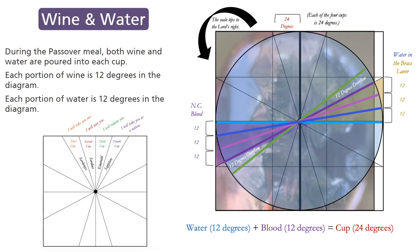During the Passover meal, both wine and water are poured into each cup. Each portion of wine is twelve degrees in the diagram. Each portion of water is twelve degrees in the diagram.